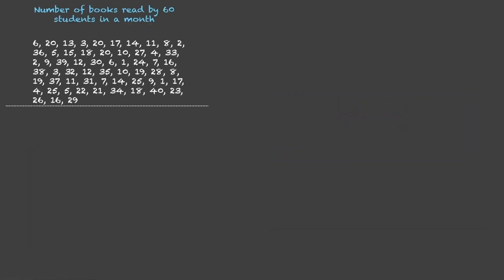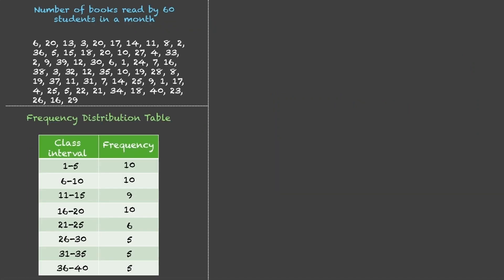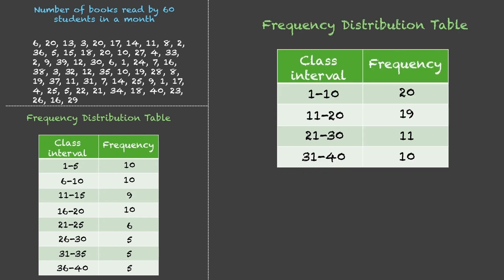For example, for the same data which we arranged like this, it can also be arranged like this. Now, over here, the class width or the class size is 10, and when we arranged it according to this class width, we have only 4 classes and we have shifted our frequency accordingly. We had 20 students who read books from 1 to 10 range, so we put 20 over here. We can choose the class width to be 15 or 16 or whatever we want.